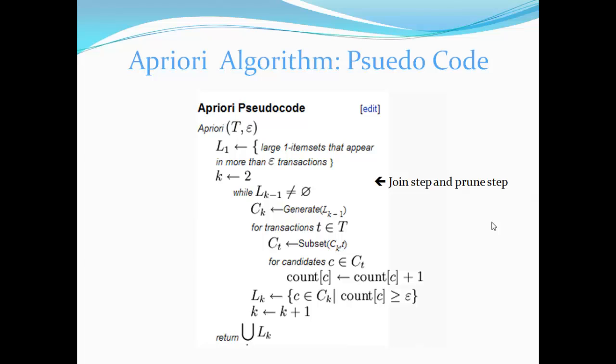And we generate the frequent item set for each and every item such as first frequent item set, second frequent item set. For each frequent item set, the items which satisfy the minimum support form the candidates. These candidates are then measured for their confidence levels and strong association rules are being generated.